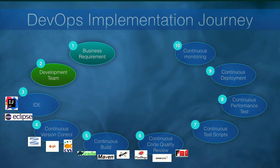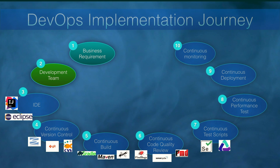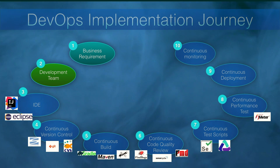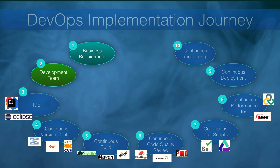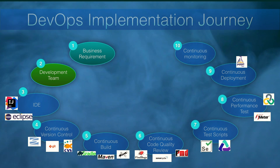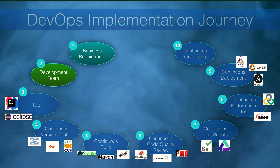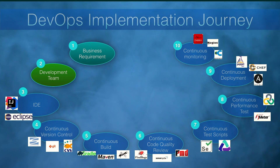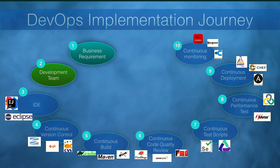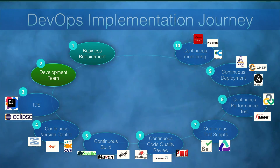For continuous testing, you can use Selenium, HP UFT, or any other similar tool. For performance testing, you can use the widely-used JMeter or HP LoadRunner. For deployment, you can use Chef, Puppet, and even Ansible. For uptime and resource monitoring, you can use Nagios, Zabbix, or even Sentryon. For business transaction monitoring and application performance monitoring, you can use AppDynamics, Appnomics, or any APM tool.